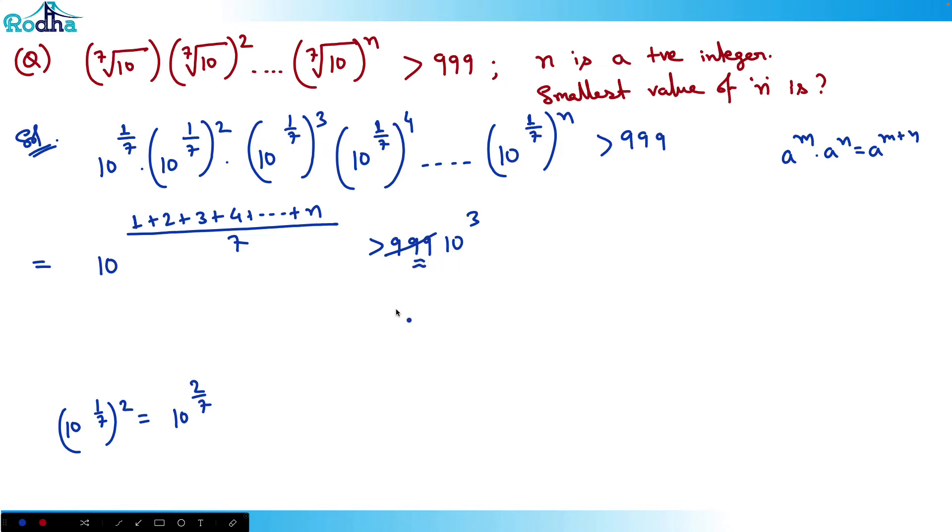What I can say is that the sum of 1 to n upon 7 should be greater than this value. This should actually be almost equal to 3 because for values less than 3 it won't satisfy. So for equal to 3 it will satisfy and that will be the minimum value of n.